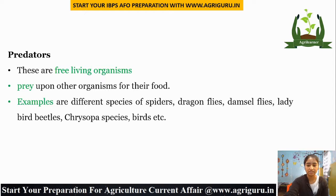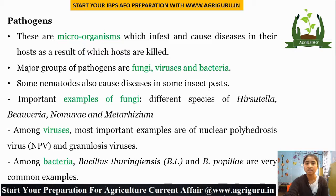Next are Pathogens — microorganisms which infest and cause disease in their hosts, as a result of which the hosts are killed. Major groups of pathogens are fungi, viruses, and bacteria. Some nematodes can also cause disease in insect pests. Examples: in fungi — Isaria, Beauveria, Nomuraea, and Metarhizium; in viruses — Nuclear Polyhedrosis Virus (NPV) and Granulosis Virus; in bacteria — Bacillus thuringiensis (Bt) and Bacillus popilliae. Bacillus thuringiensis is most widely used in cotton to control pink bollworm.